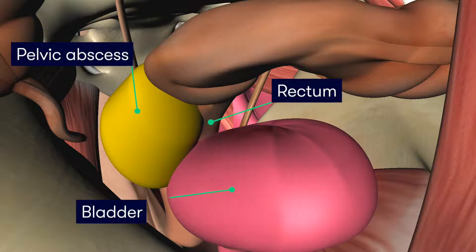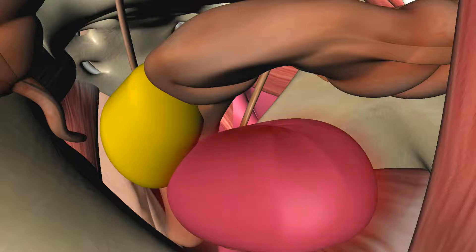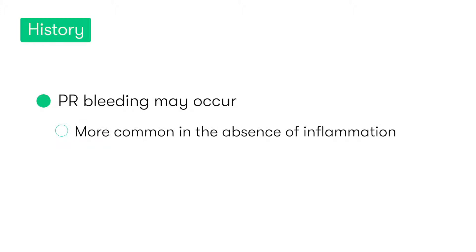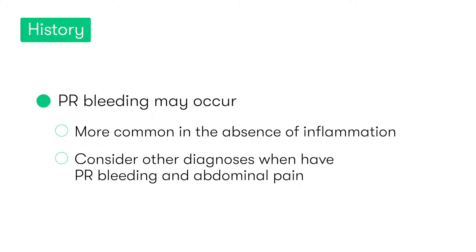Bladder irritation symptoms can be very similar to those a patient would describe with a urinary tract infection. The patient may also complain of PR bleeding with diverticulitis; however, this occurs more commonly in simple diverticular disease where there isn't any active inflammation. Typically in that scenario, the patient describes the absence of any abdominal pain. Thus, if the patient experiences PR bleeding as well as left iliac fossa pain, we should be considering alternative diagnoses — for example, ischemic colitis.